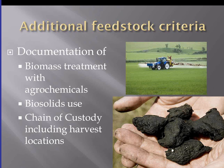In the case where feedstocks are treated with agrochemicals, there needs to be documentation of that agrochemical use including application rates and dates — this is to address concerns of potential accumulation of contaminants in the feedstock. If biosolids are to be used as the feedstock for biochar, it is permissible under the IBI biochar standards; however, it needs to meet the requirements for biosolids, which means documenting that it's free of heavy metals or other organic pollutants, and biosolids would also have to meet any local regulations around land application.